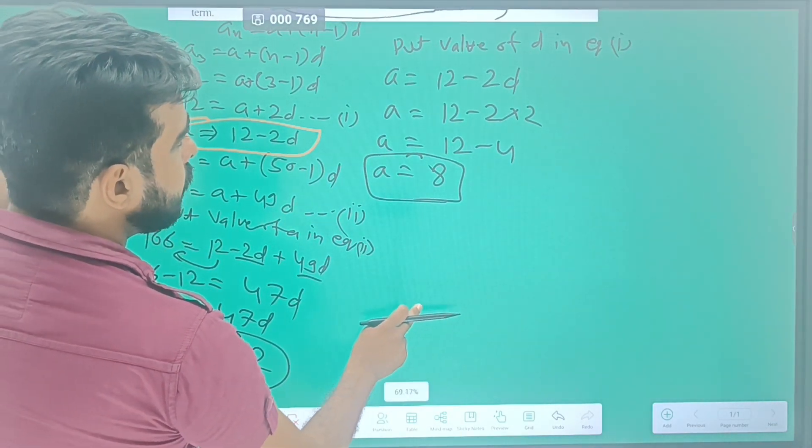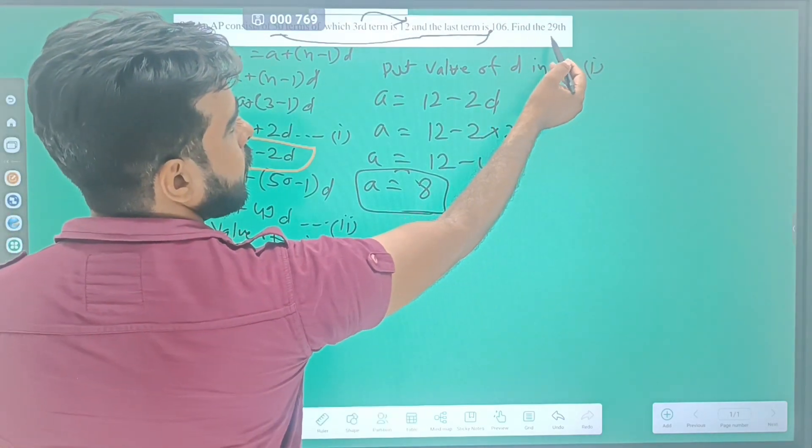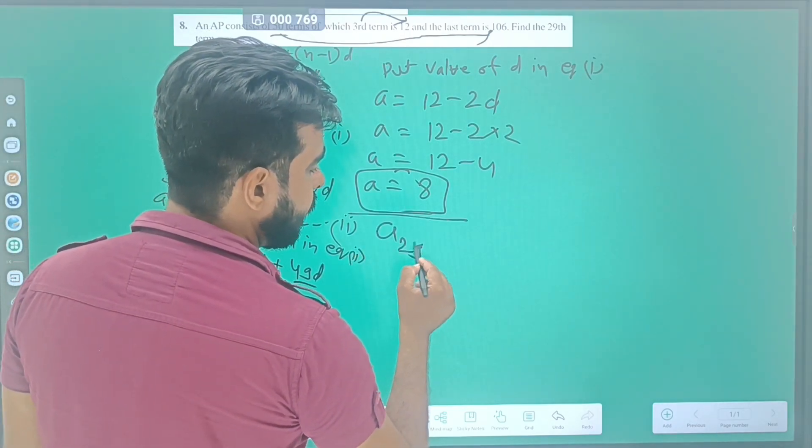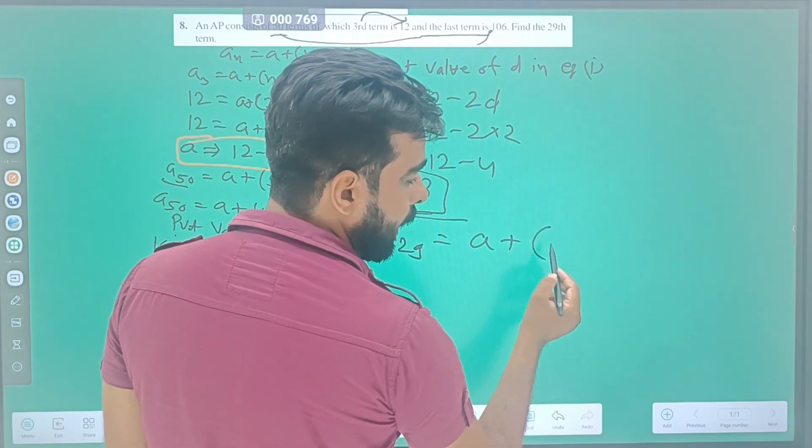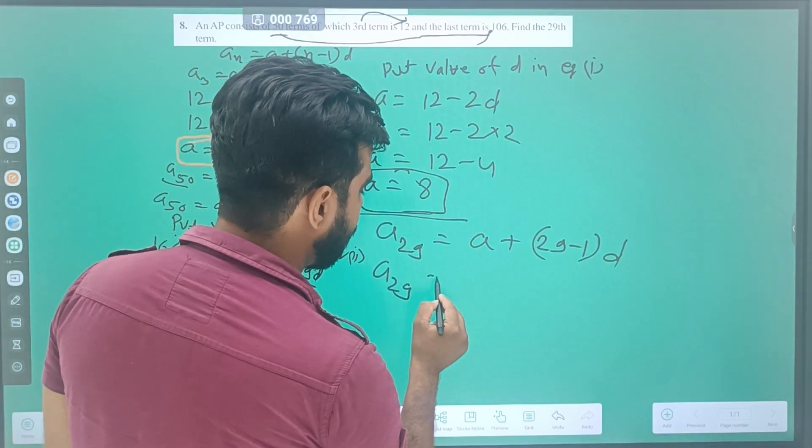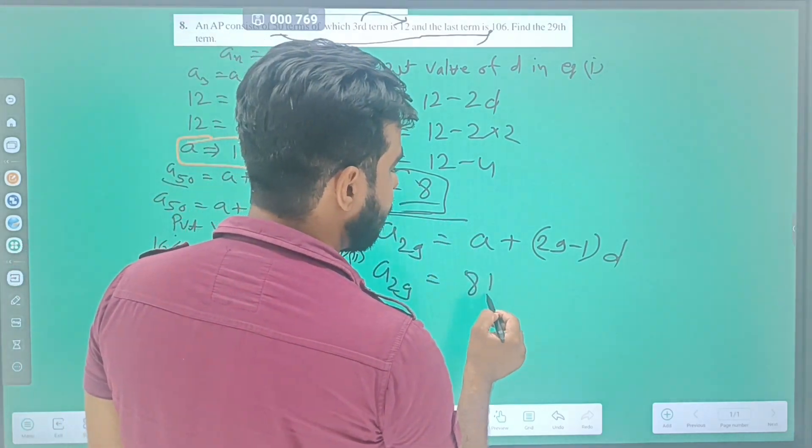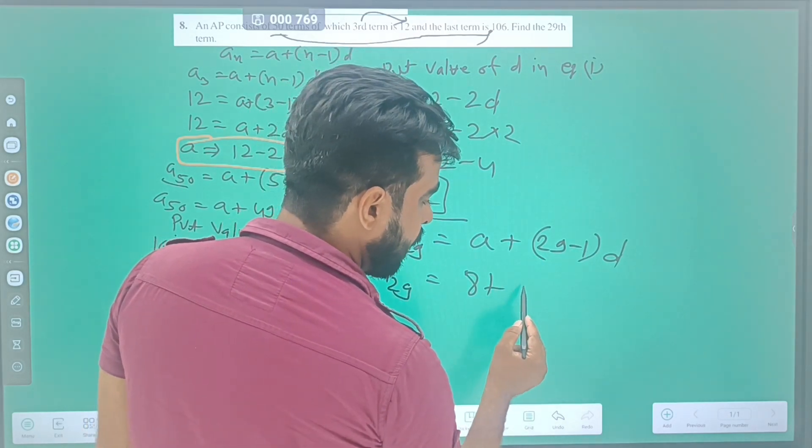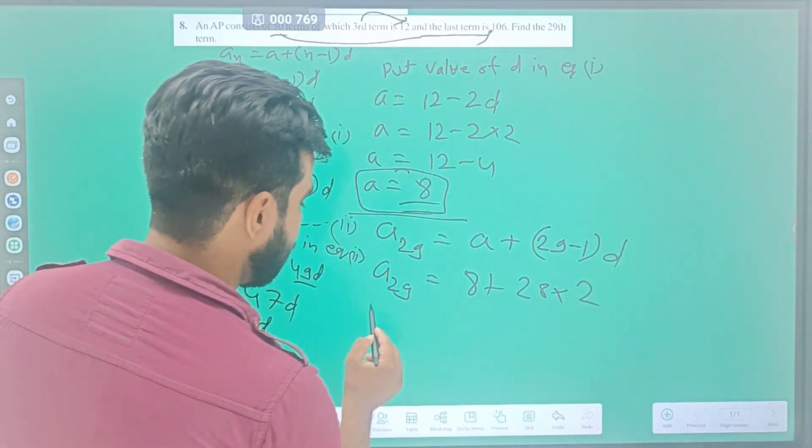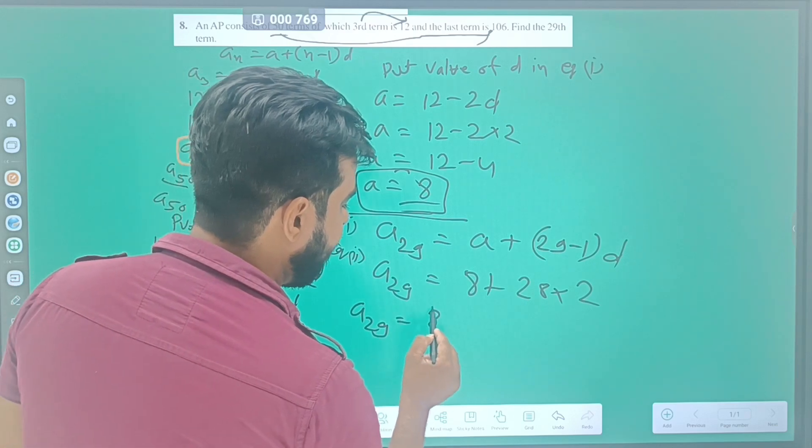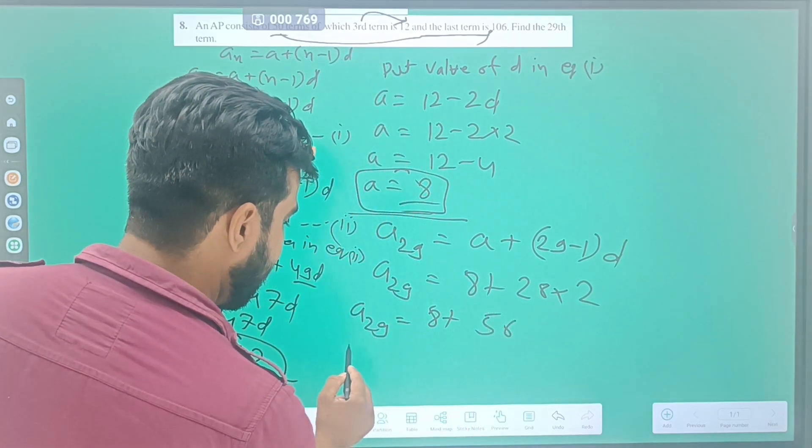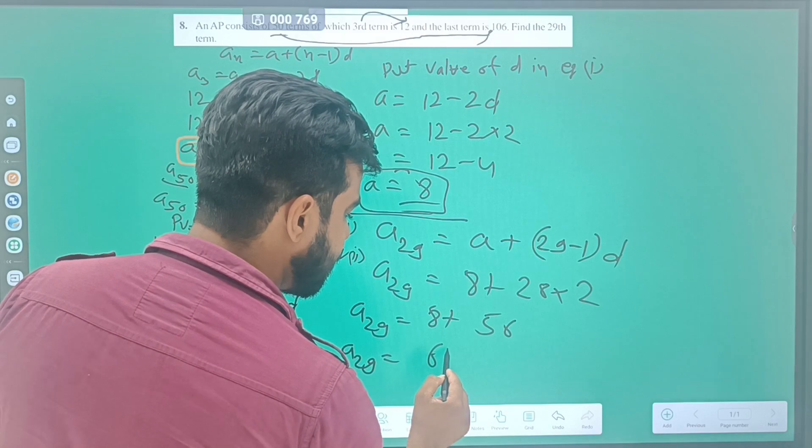We have to find the 29th term. a_29 = a + (29-1)d. a_29 = 8 + 28 × 2 = 8 + 56. Then a_29 = 64.